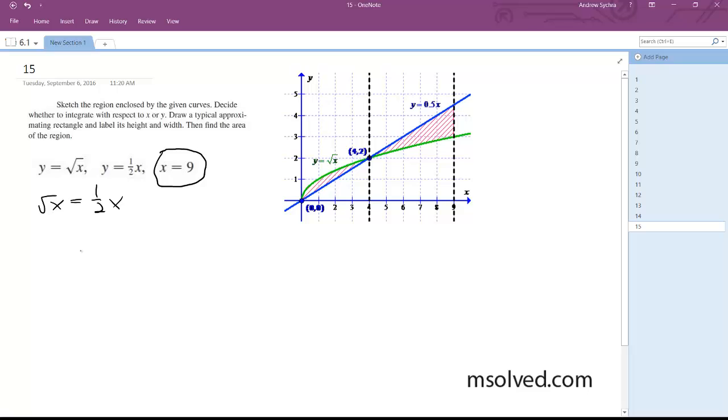So what we do here is the initial intersection points are going to be 0 and 4.